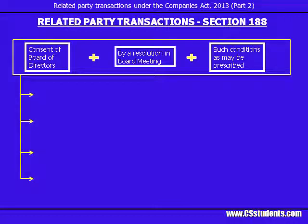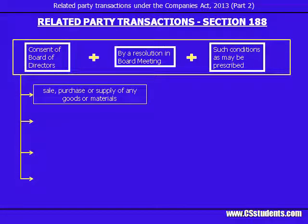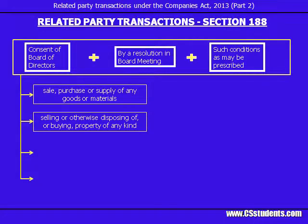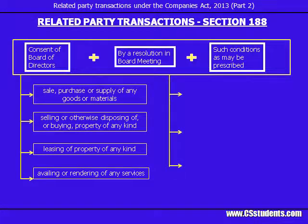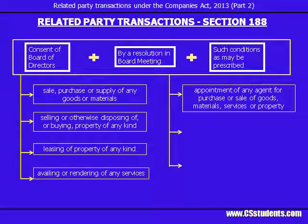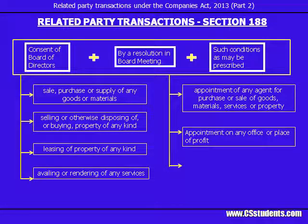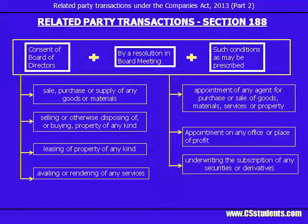The related party contracts and arrangements covered are: sale, purchase or supply of any goods or materials; selling or otherwise disposing of, or buying, property of any kind; leasing of property of any kind; availing or rendering of any services; appointment of any agent for purchase or sale of goods, materials, services or property; such related party's appointment to any office or place of profit in the company, its subsidiary company, or associate company; and underwriting the subscription of any securities or derivatives thereof of the company.